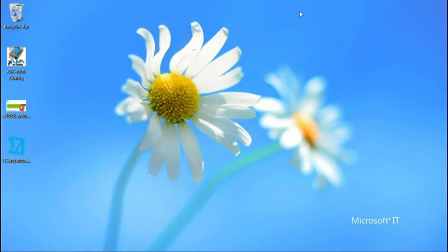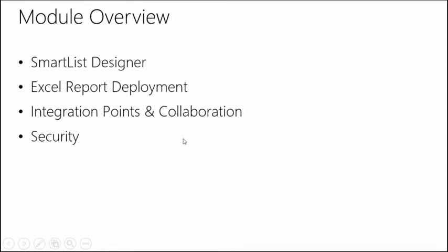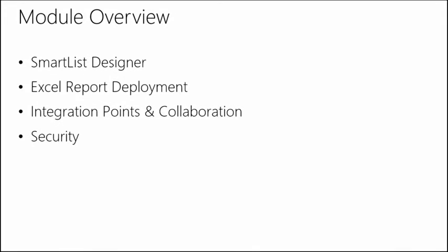So that's your Excel report deployment recap. We have about 250 reports available within Microsoft Dynamics GP. Deployment can be to a SharePoint site on-premise, Office 365 environment, or local network share. Now that we've got our reports deployed, let's look at our integration points, how the reports look, how they function, and some different collaboration opportunities available because of the Office integration we have.